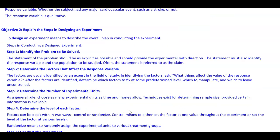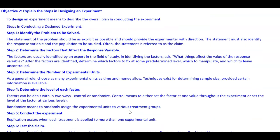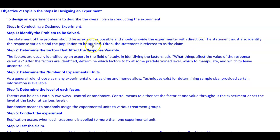Objective two: explain the steps in designing an experiment. To design an experiment means to describe the overall plan in conducting the experiment. Step one: identify the problem to be solved. The statement of the problem should be as explicit as possible and should provide the experimenter with direction. The statement must identify the response variable and the population to be studied. Often, the statement is referred to as the claim.